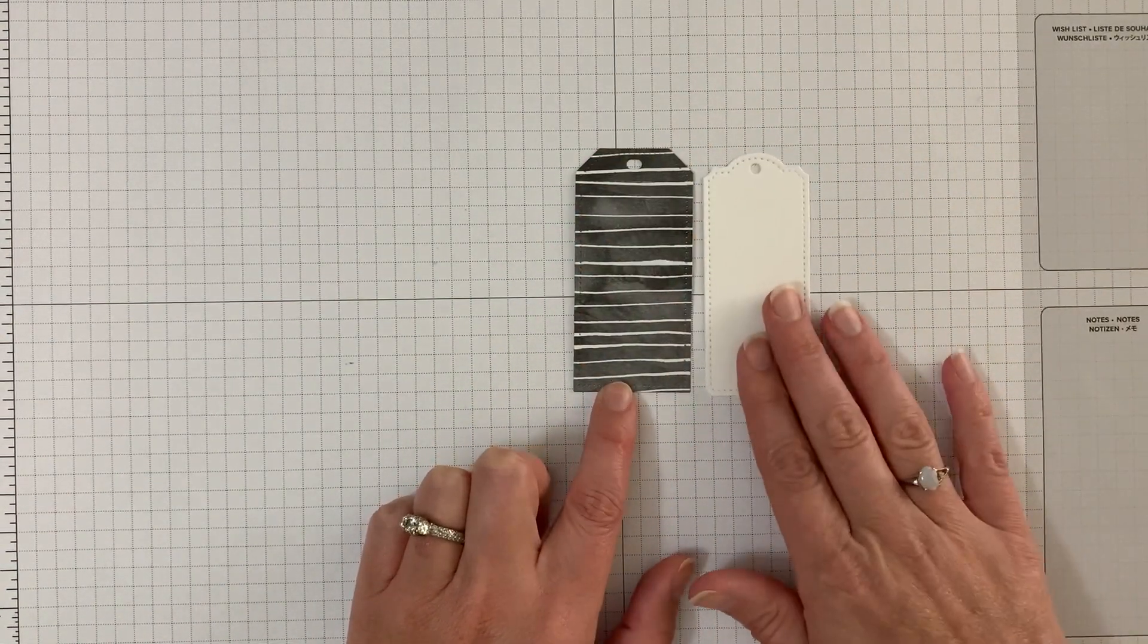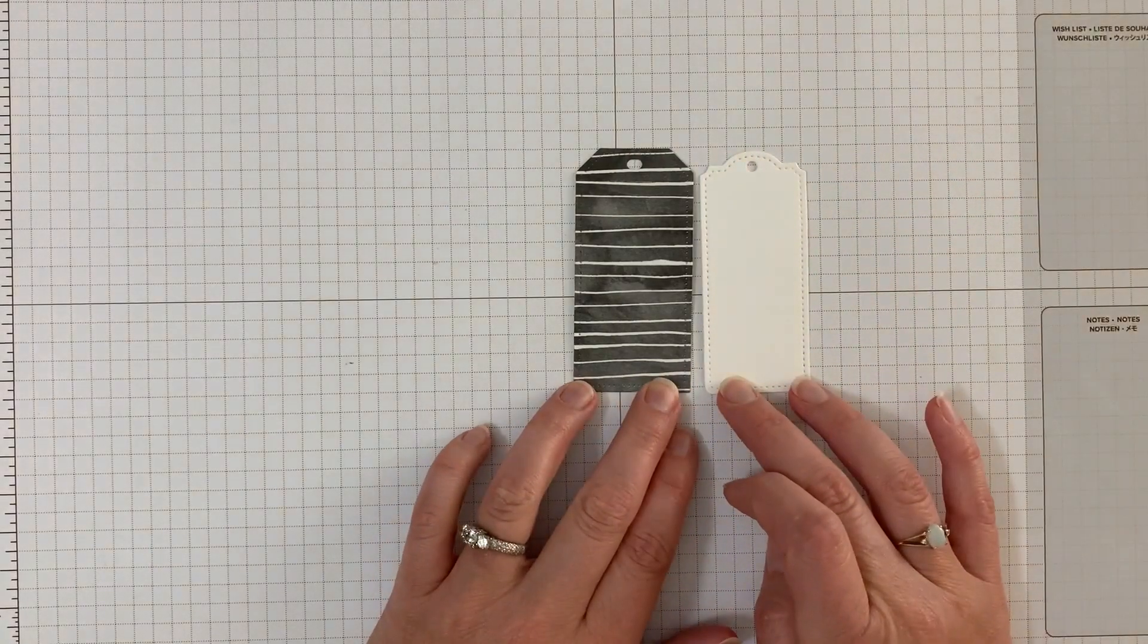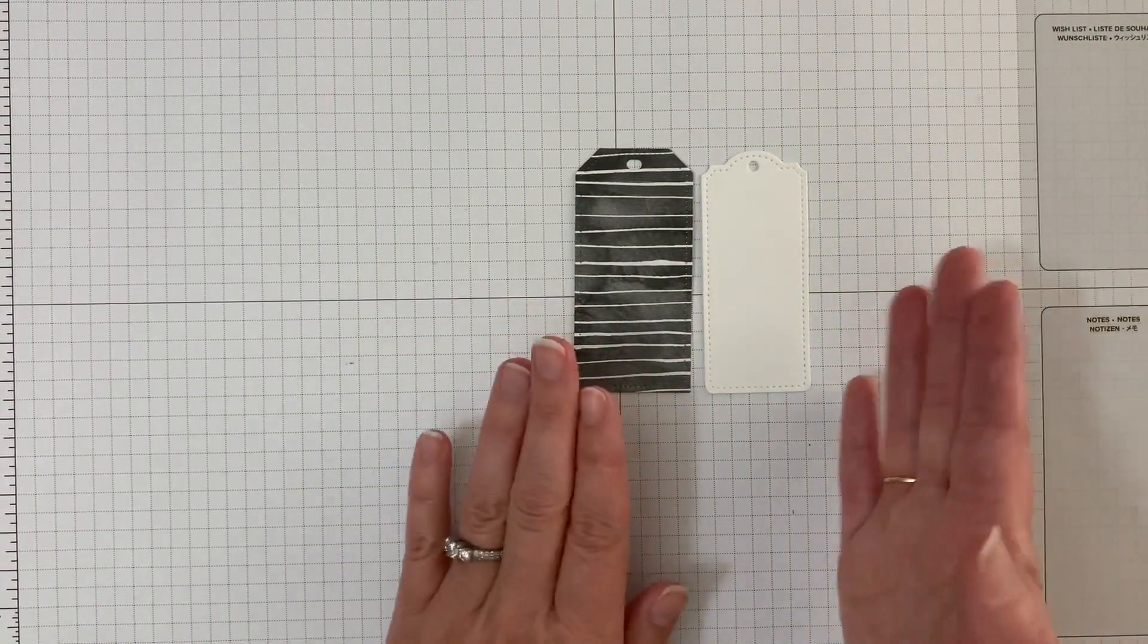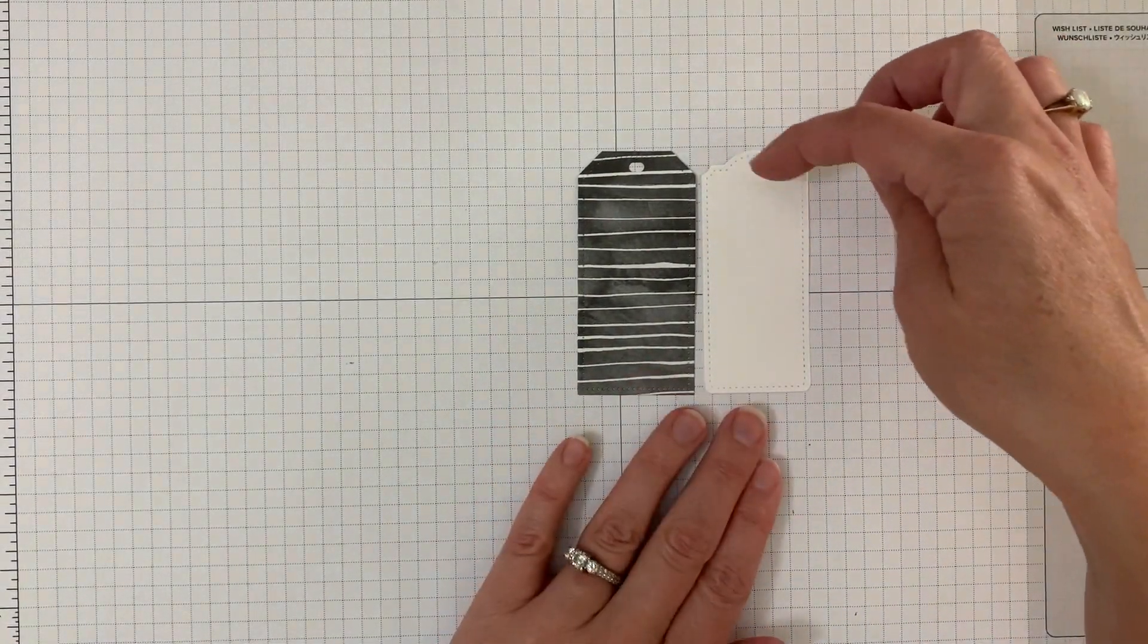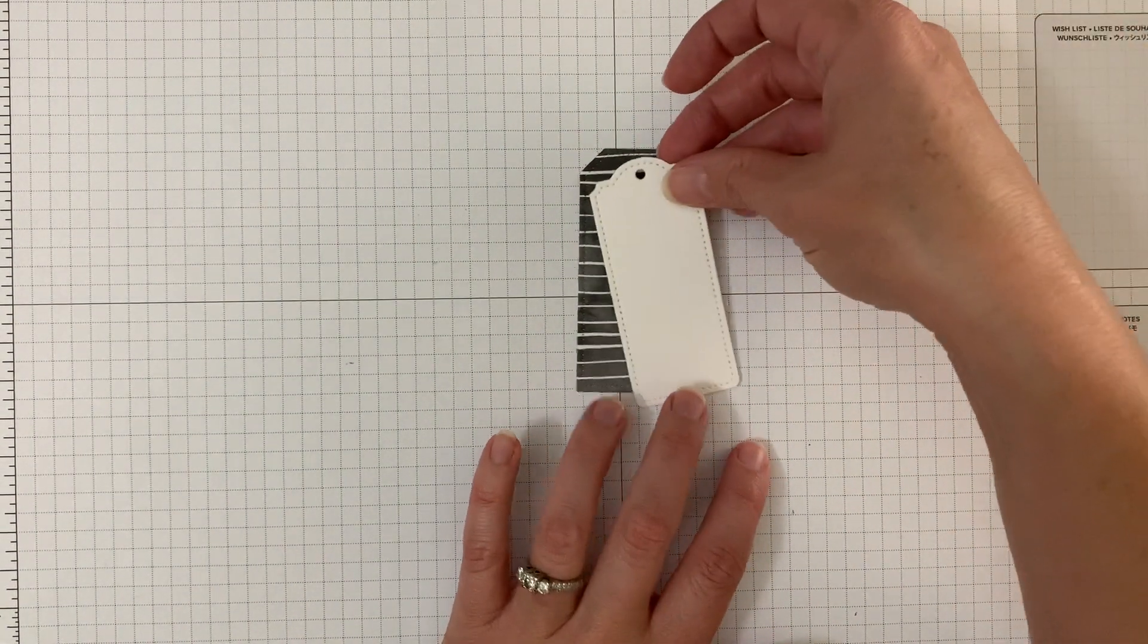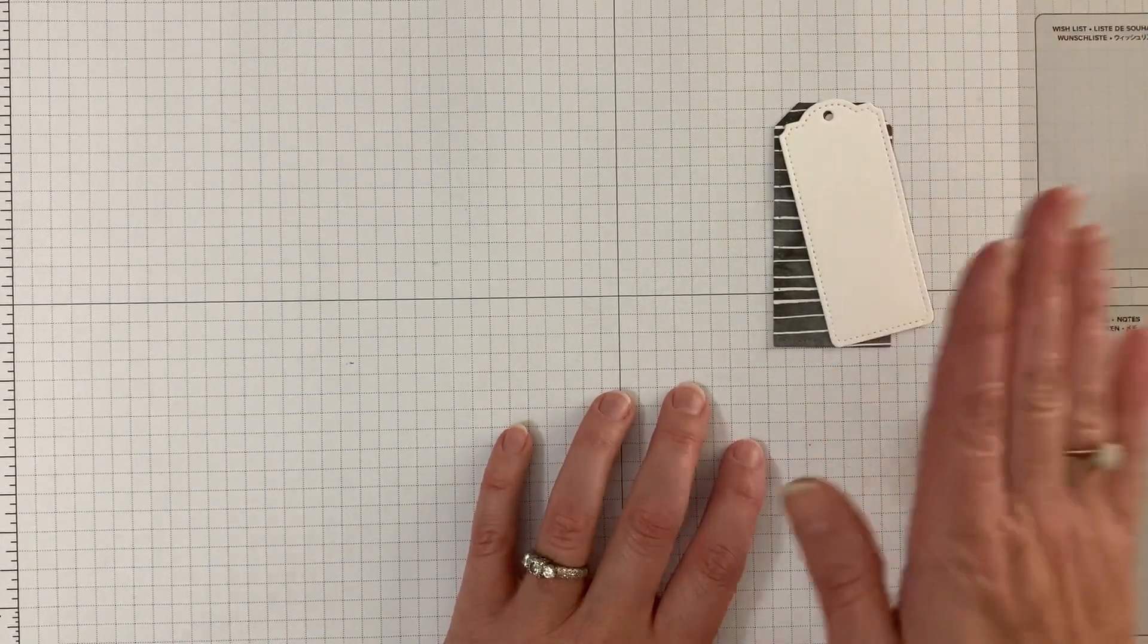I use the tailor-made tag dies and just cut out one of each of these. So these are the two different designs, I don't think it matters. You can also do a smaller and a bigger one of the same if that's what you feel like doing.